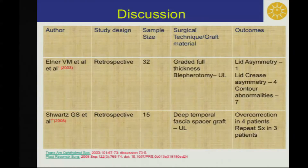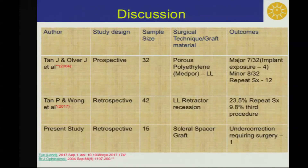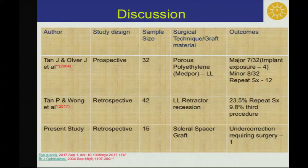Eleanor B.M. et al. used full thickness blepharotomy but landed up with lid asymmetry in 1 patient and lid crease asymmetry in 4. Schwartz G. et al. used deep temporal fascia spacer graft for the upper lid, but there was overcorrection in 4 patients. Tanji and Orwell G. et al. used Medpore, but landed up with major complications in 7 and minor in 8 patients. Tanpi and Wong et al. did lower lid retractor recession, but repeat surgeries were required in 23.5% of patients.